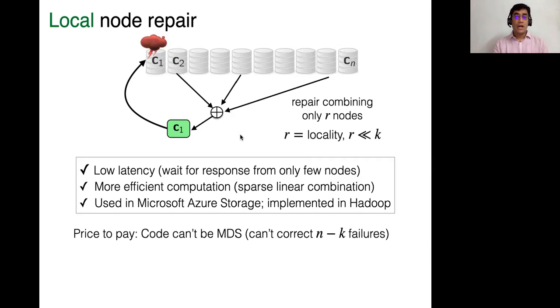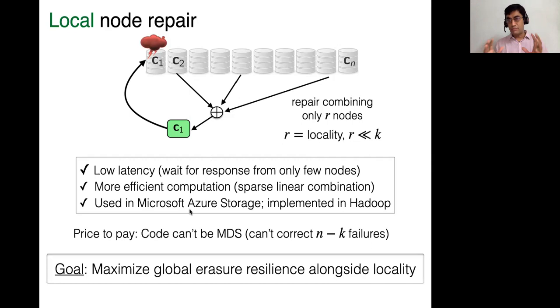But the price to pay for locality is that the code cannot have this optimal MDS property, because remember I said that an MDS code has this property that if you contact fewer than K things, you get no information about C1. And here, I actually want to recover C1 by contacting very few nodes. So in particular, it won't have the optimal erasure resilience, the global erasure resilience of correcting a really large number of failures in catastrophic settings. So given the situation, the goal then becomes a balancing act. You want to have the strong locality, but subject to this locality, you want to maximize the global failure or erasure resilience. So you want to be able to correct a lot of erasures should some catastrophic things happen, but now you're constrained by your locality requirement. So you cannot achieve this N minus K. So in this setting, what can you actually achieve?